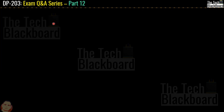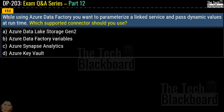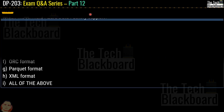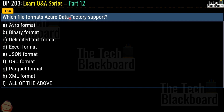Now a few questions on Azure Data Factory. Question 153: while using Azure Data Factory, you want to parameterize a linked service and pass dynamic values at runtime. Which supported connector should you use? Options are Azure Data Lake Storage Gen2, Azure Data Factory variables, Azure Synapse Analytics, or Azure Key Vault. The correct answer is option C — Azure Synapse Analytics.